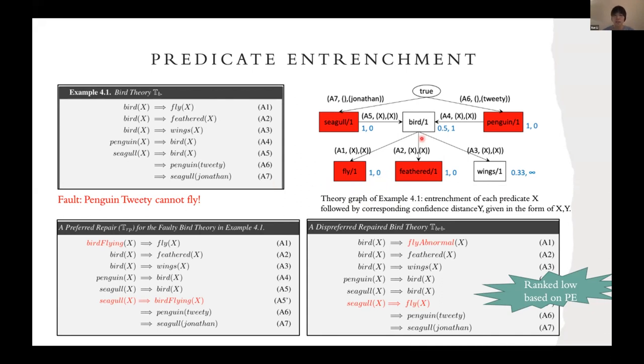We can see bird is more entrenched than wings and less entrenched than the other ones in the benchmark.